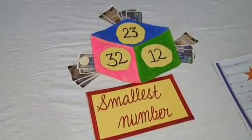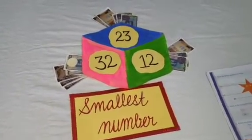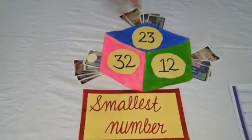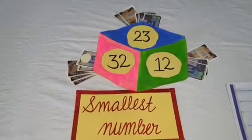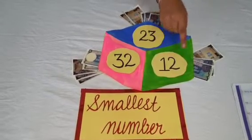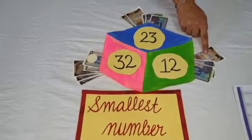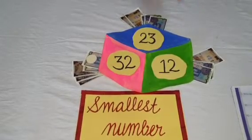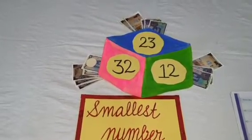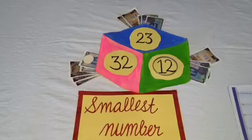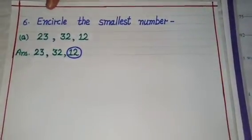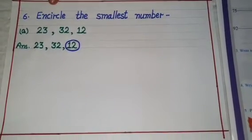Now we have to find the smallest number. The number with the least 10 rupee notes will be the smallest. In 12, there is only 1 note of rupees 10, so it is the smallest number. We can make a circle on it like this. Now you have to note down the sum like this in your notebooks.